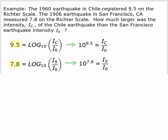I can rewrite these two expressions in exponential form and we get 10 to the 9.5 equals the ratio of the Chile earthquake intensity over I sub not. And we have 10 to the 7.8 power equals the intensity of the San Francisco earthquake over I sub not.